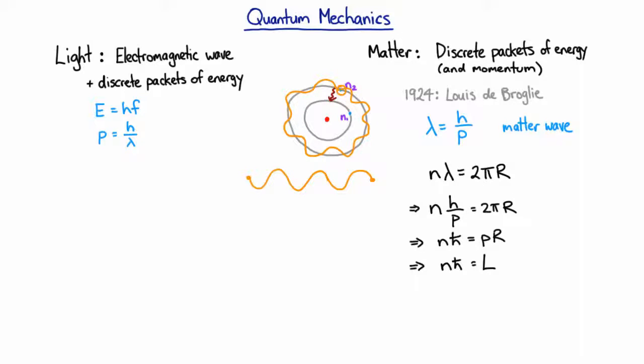The acid test of whether something's a wave or not is whether you can make some kind of interference pattern or a diffraction pattern with it. In this case, the evidence came very quickly indeed. The very next year, Davisson and Germer fired some electrons at nickel and discovered a diffraction pattern.